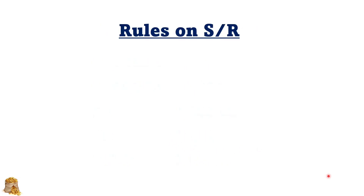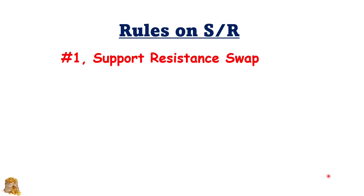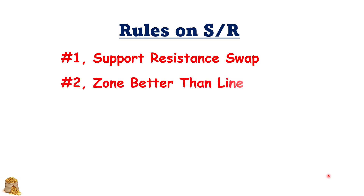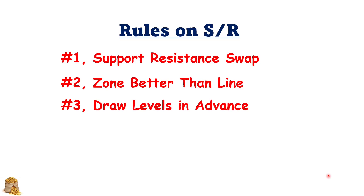There are a few rules when we trade the support and resistance. Number one, the support and resistance levels can swap their position — the previous support level can become a resistance level later on. Number two, it's better to apply the value zone rather than just a single line, especially when trading the higher timeframe. Number three, you need to draw the levels in advance because that will help you define your profit target and also see when the market will go.